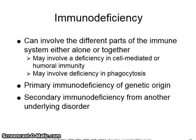Immunodeficiency can involve different parts of the immune system either alone or together, and may involve a deficiency in cell-mediated or humoral immunity. It may also involve deficiency in phagocytosis. Primary immunodeficiency is of genetic origin, while secondary immunodeficiency comes from another underlying disorder.